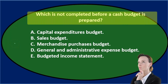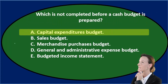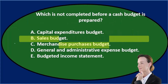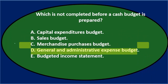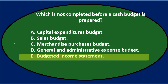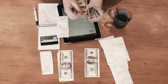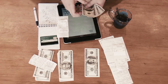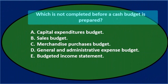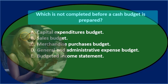Next question: which is not completed before a cash budget is prepared? A. A capital expenditures budget. B. Sales budget. C. Merchandise purchases budget. D. General and administrative expense budget. And E. Budgeted income statement. Let's go through this using the process of elimination. We have to imagine the order in which we do the budgets. We do the budgets in some type of order so that we don't get out of sequence. The cash budget is kind of near the end — in the lower third of the budgeting process — so we have to do a lot of stuff before the cash budget.